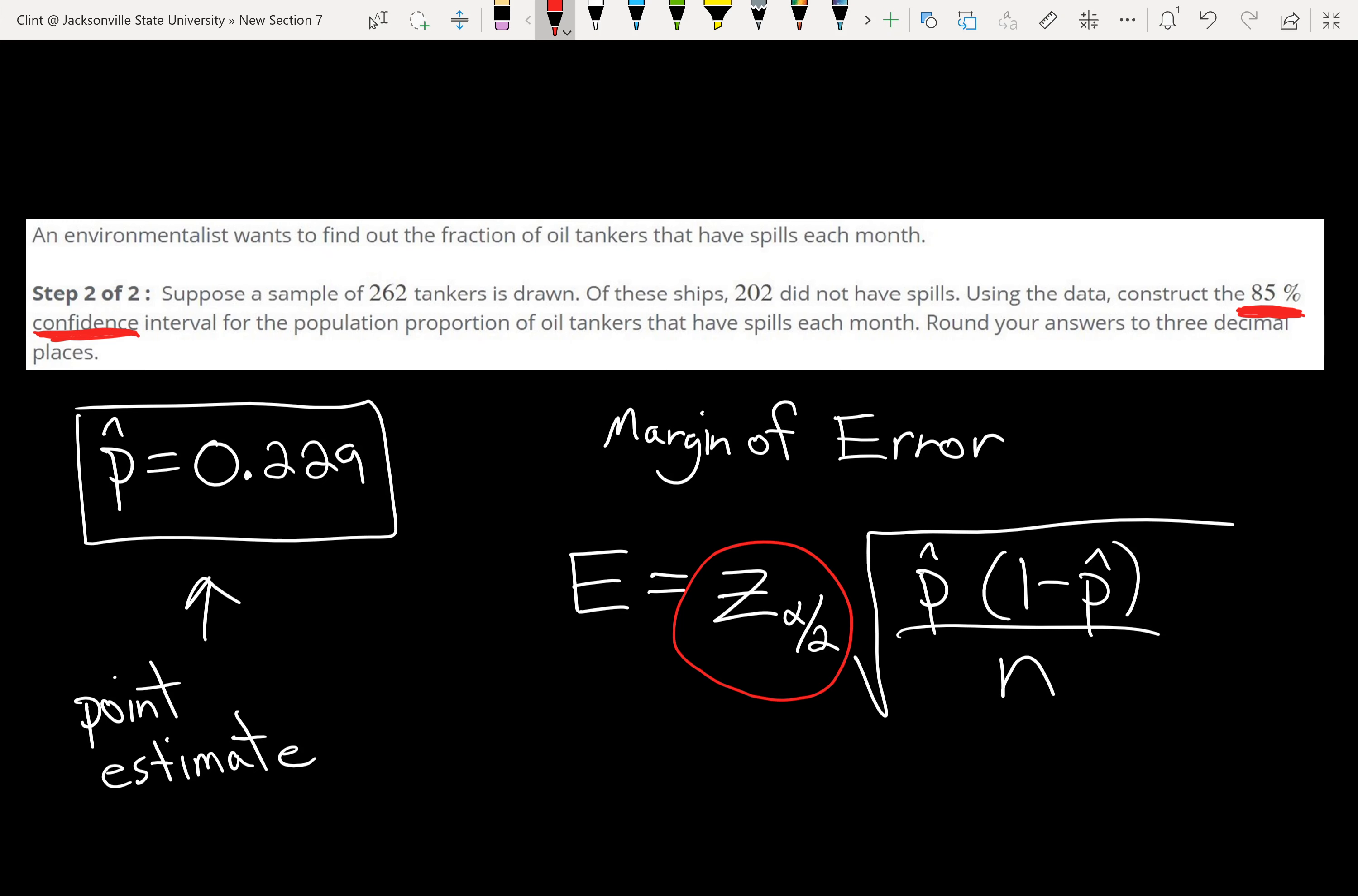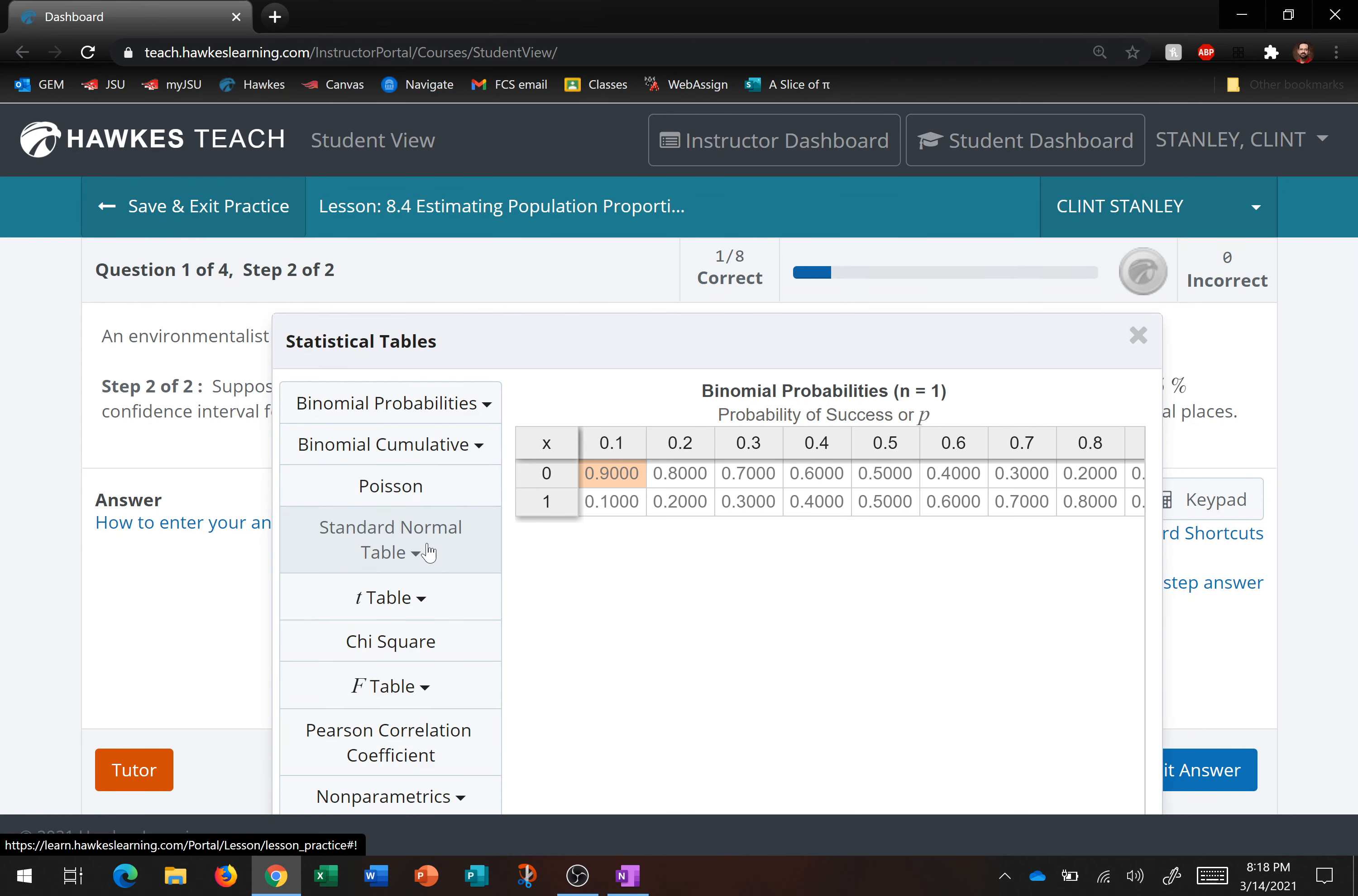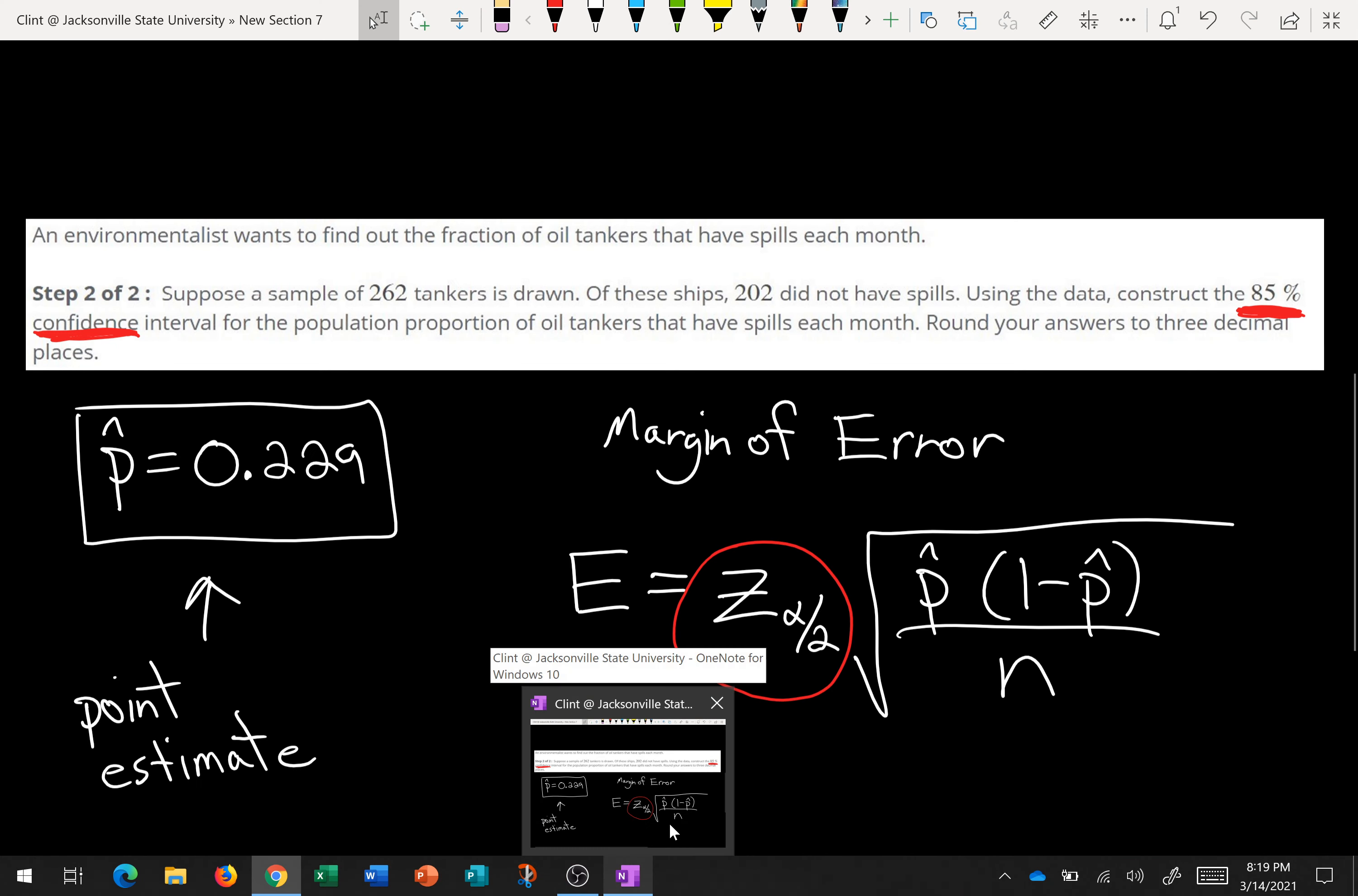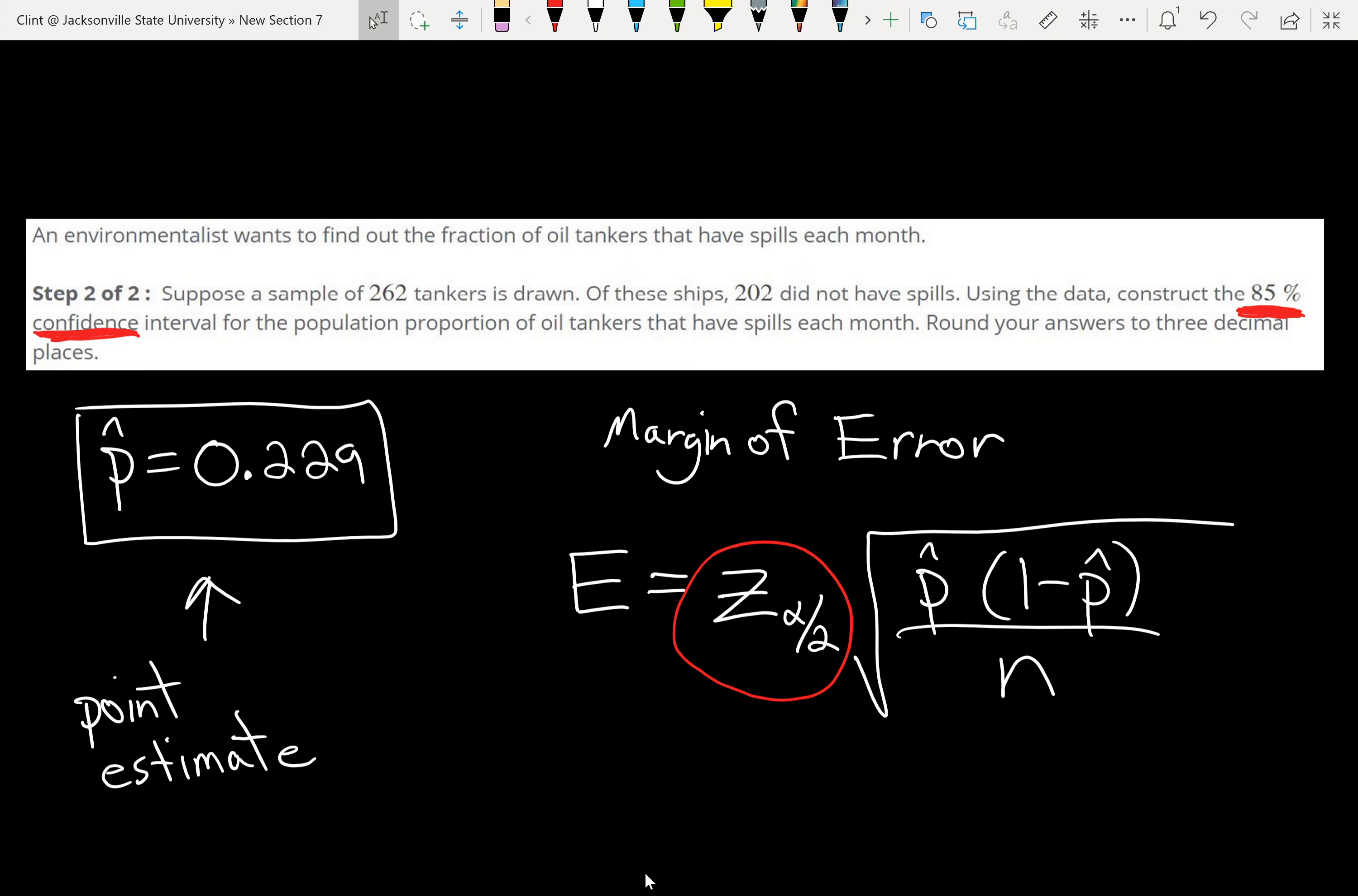So let's go look at that table, the critical values of z. So we'll go to the standard normal table and at the bottom we have critical values. And this one said we wanted 85% confidence. So for 85% confidence, our critical z value is 1.44. And z alpha over 2, 1.44. So here we have 1.44.